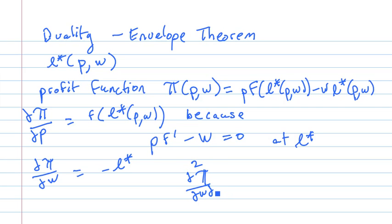So partial squared pi partial W squared is equal to minus partial L star partial W. That is you can get in effect the labor demand curve from the profit function directly. It's kind of a neat trick.